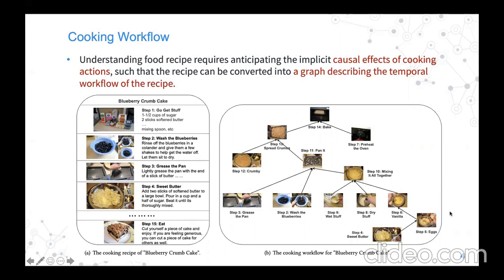For example, as shown in the right figure, the blueberries should be processed before we put them in the pan, but the blueberries can be processed in parallel with greens in the pan. By understanding all those causal relationships in a recipe, we can convert a recipe from an unstructured document into a structured graph that describes the temporal workflow of the recipe, as shown in the right figure.